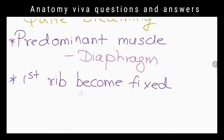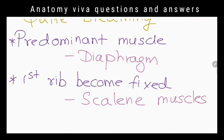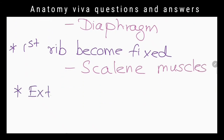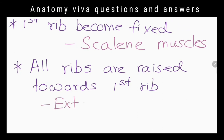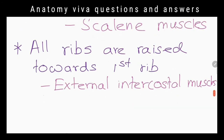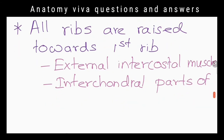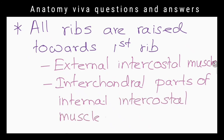Does the first rib move in quiet inspiration? No, it becomes fixed by contraction of the scalene muscles. What is the function of external intercostal muscles in quiet inspiration? They raise all the other ribs towards the first rib.